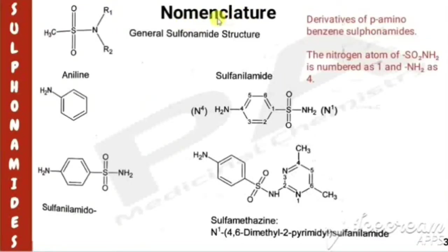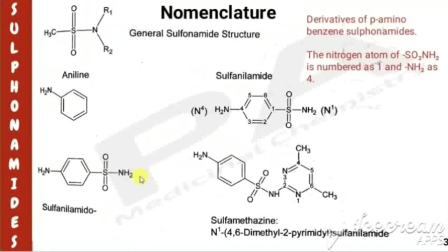Now we'll see the nomenclature of sulfonamides. The general structure of sulfonamide has an SO2NH2 group. Sulfonamide is a fusion of aniline (a benzene ring with NH2) and a sulfonamide group (SO2NH2). The basic nucleus for sulfonamide is a benzene ring with NH2 and SO2NH2, where the sulfonamide group is aniline connected with SO2NH.